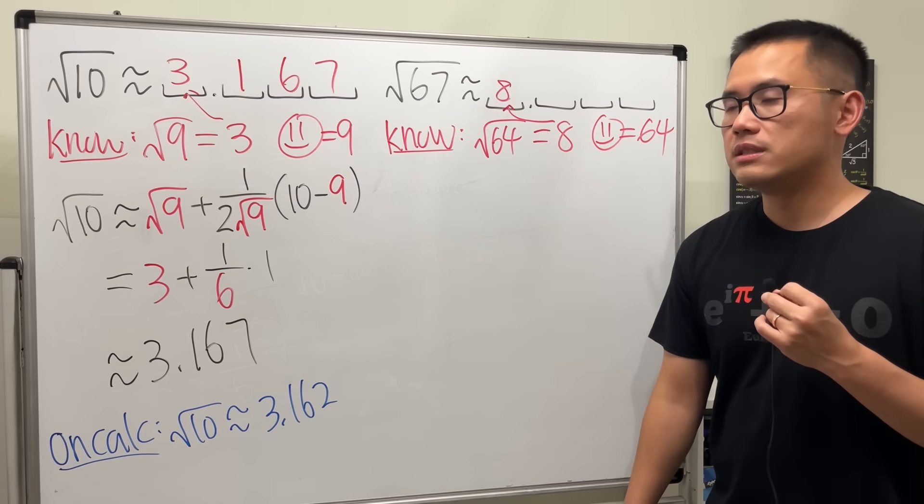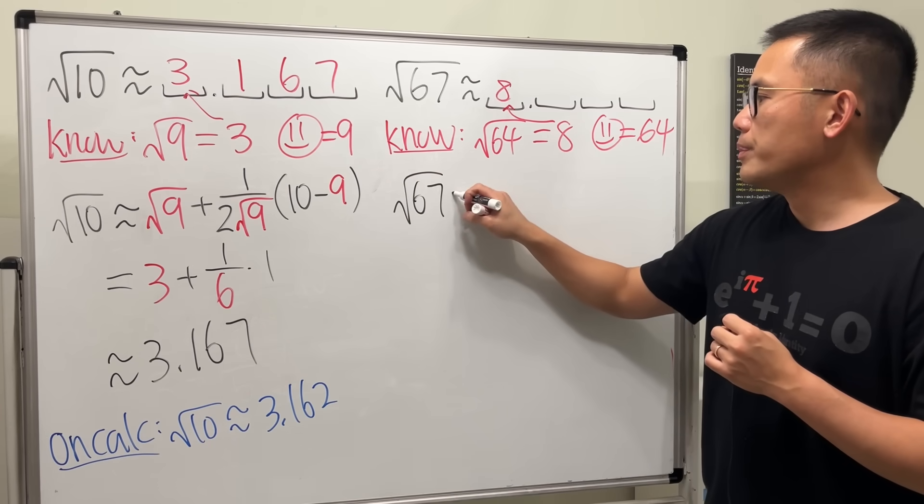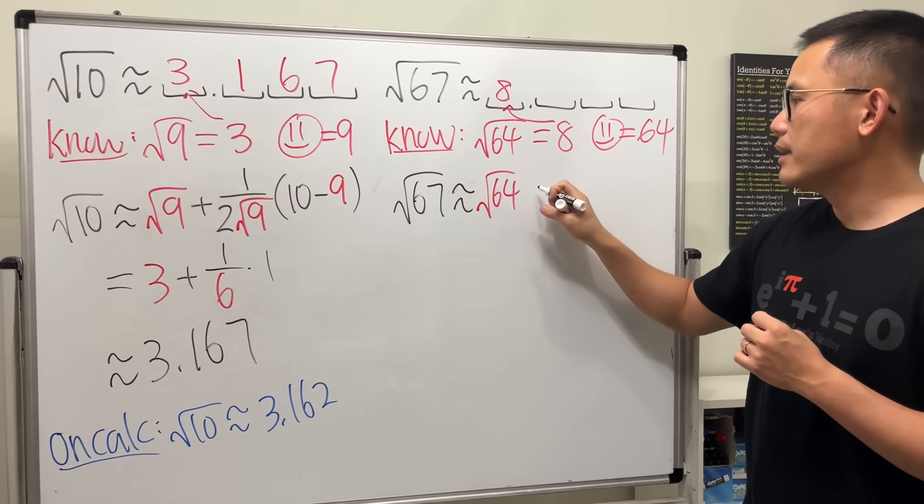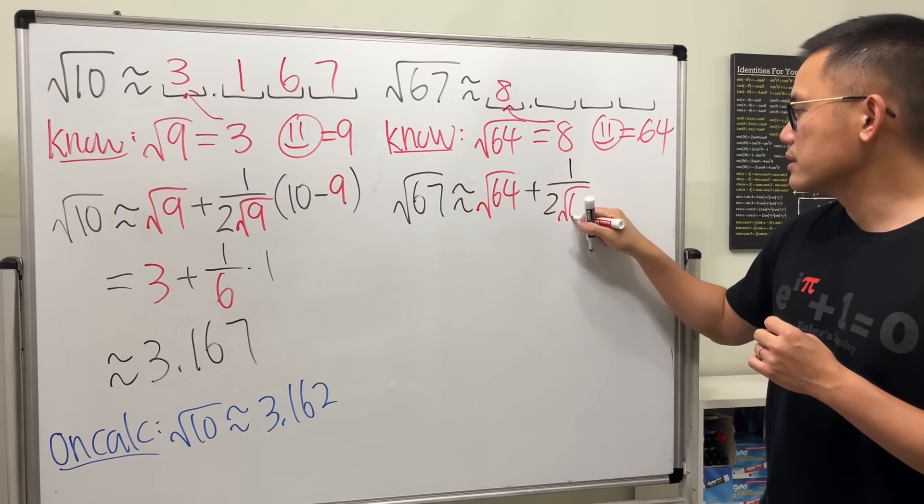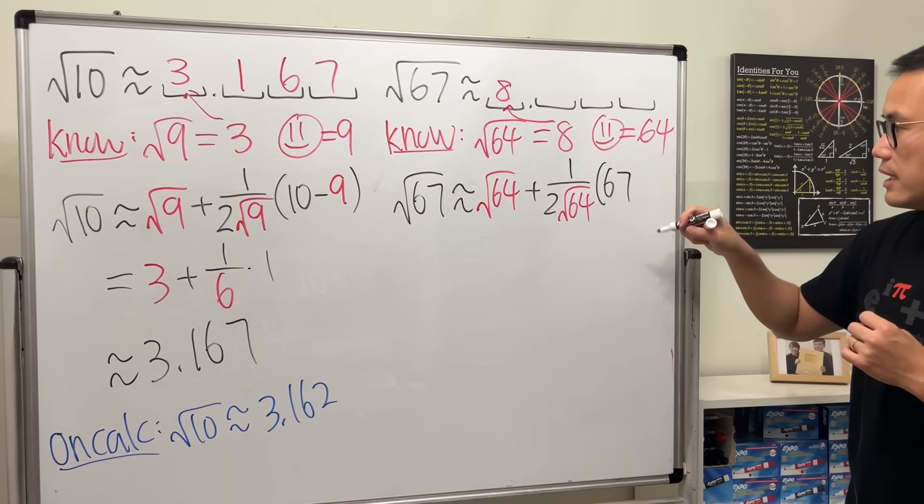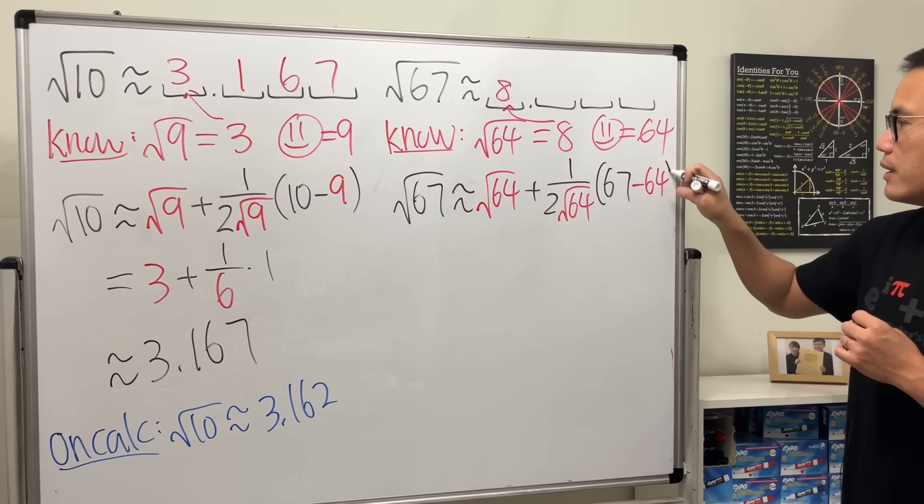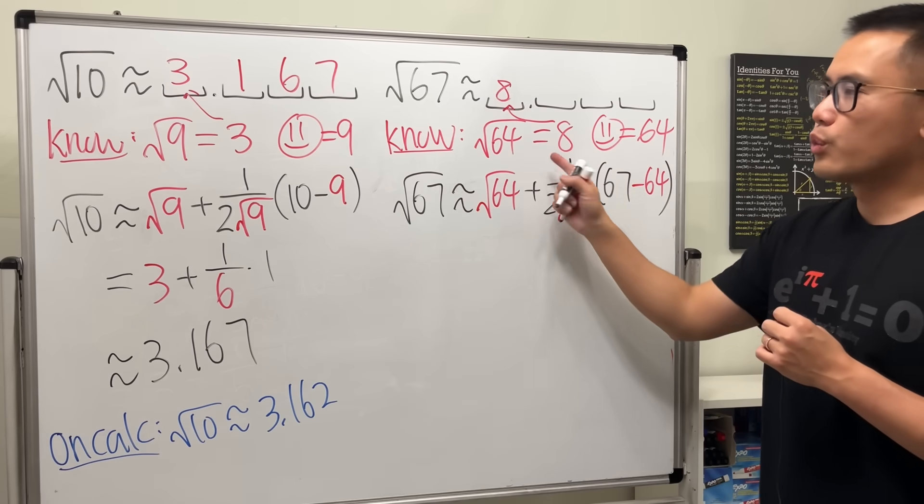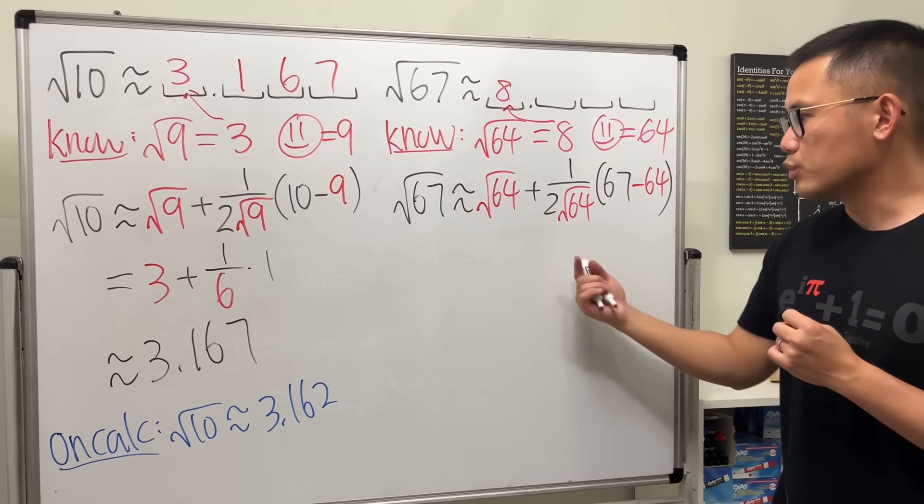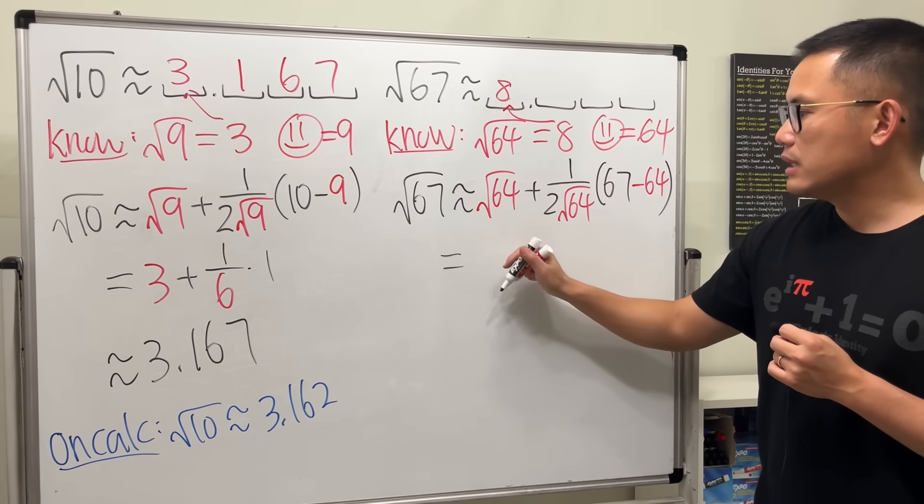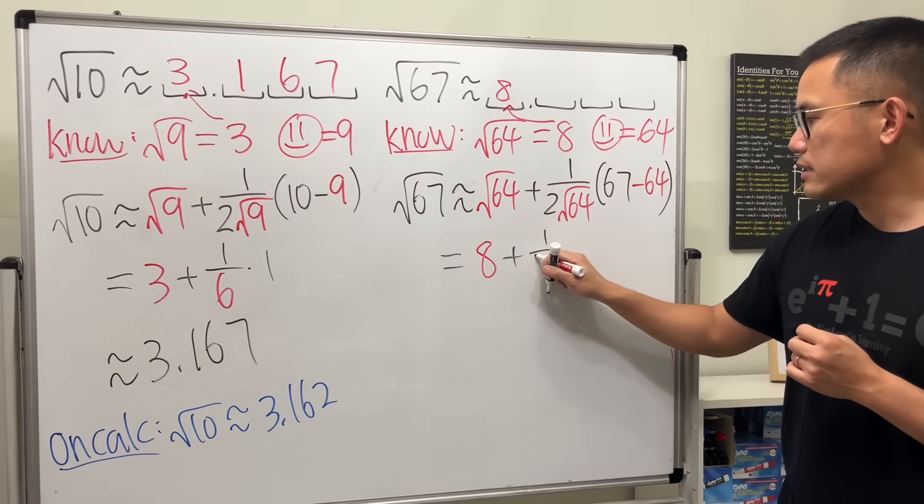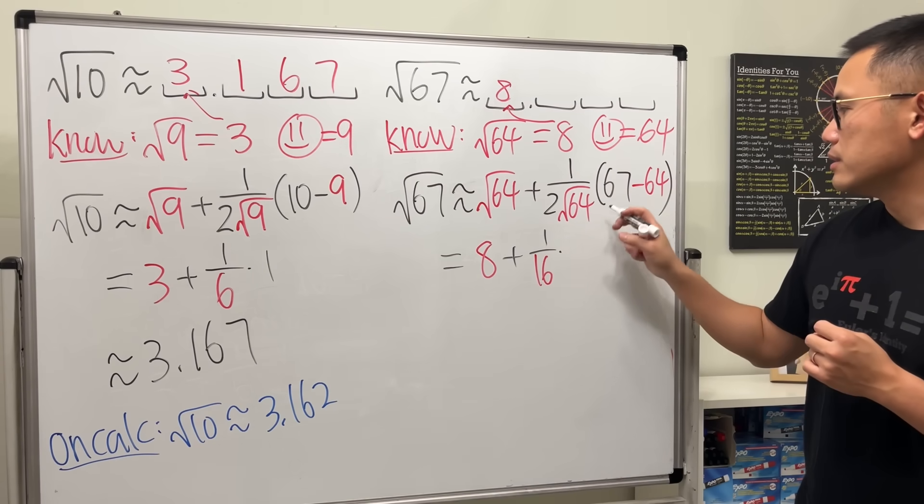Square root of 67. This will be approximately this number. And then, plus 1 over 2, square root of 64, times whatever the input is, which is 67, minus the happy face number, which is 64. The happy face is the square root number that you know. That's just a little bit less than the input here. And then just work this out. This is 8.